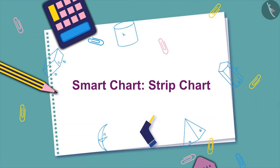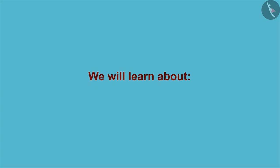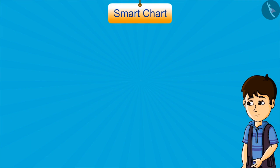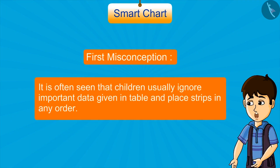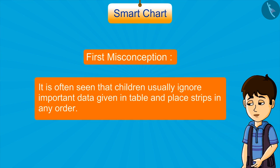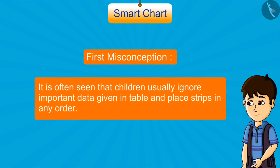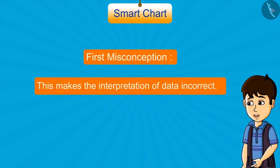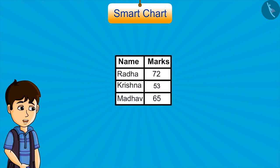Smart Chart Strip Chart. In this video, we will learn about some common misconceptions related to strip charts. It is often seen that children usually ignore important data given in a table and place strips in any order. This makes the interpretation of data incorrect. For example, look at this data.